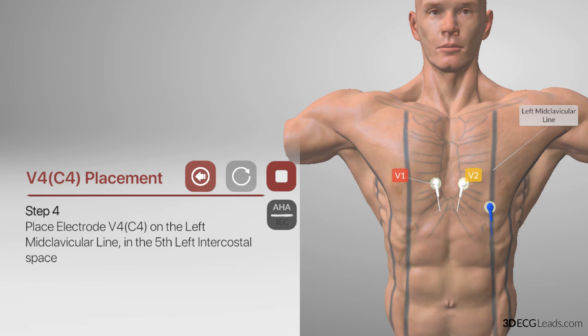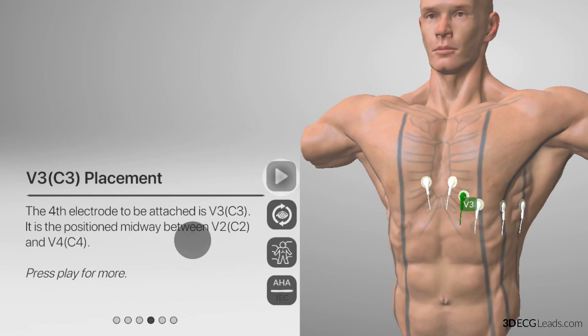The mid-clavicular line is the imaginary line that passes through the midpoint of the collarbone, also known as the clavicle, parallel to the long axis of the body. Now, press stop to move on to the next electrode to be placed, which will be V3.